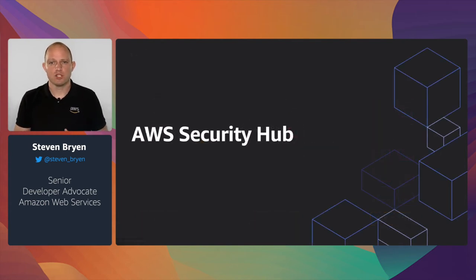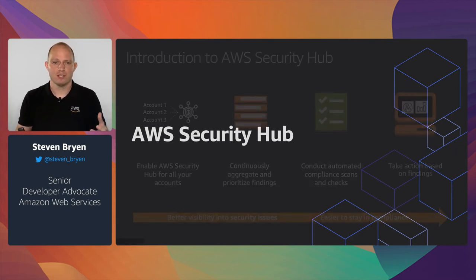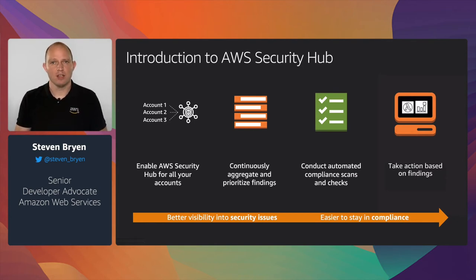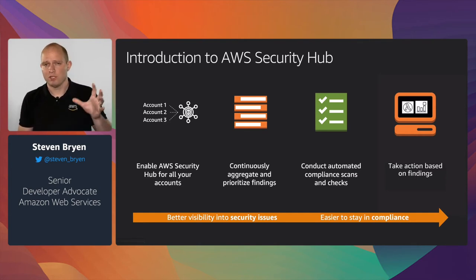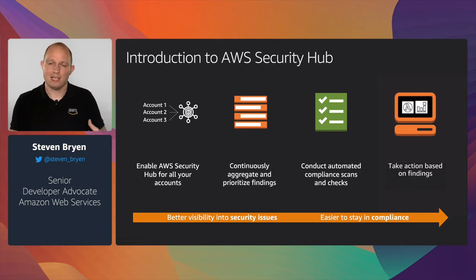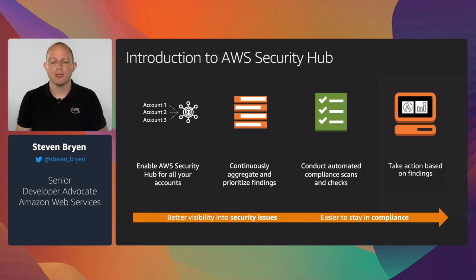The next service is Security Hub — a service that centralizes and aggregates all security findings in your AWS accounts, giving you a central dashboard to view findings and insights from a security perspective. You can enable this for all your AWS accounts, continually aggregate and prioritize findings, conduct automated compliance scans and checks, and take automated actions based on findings.